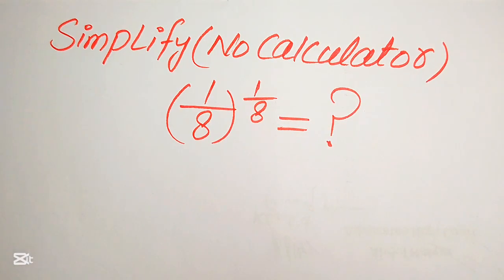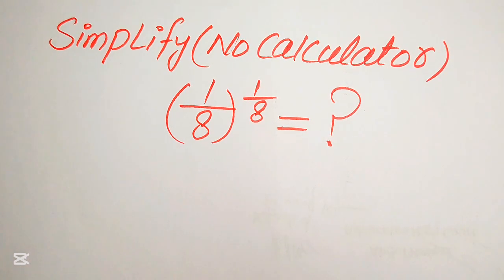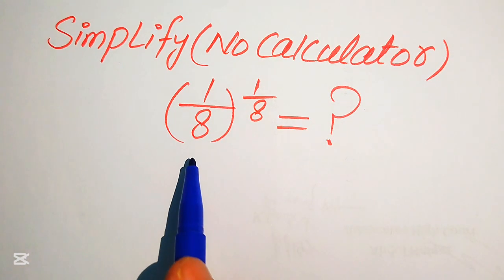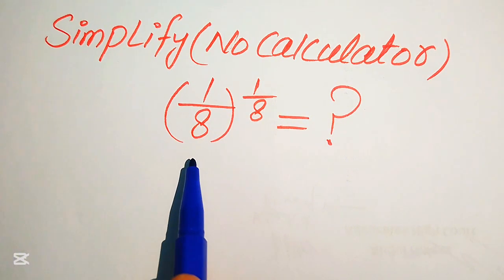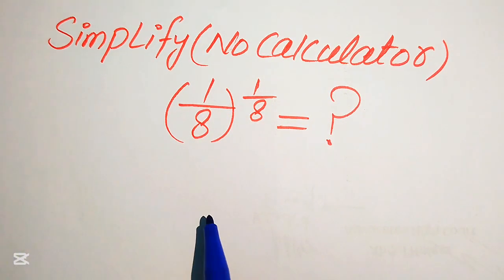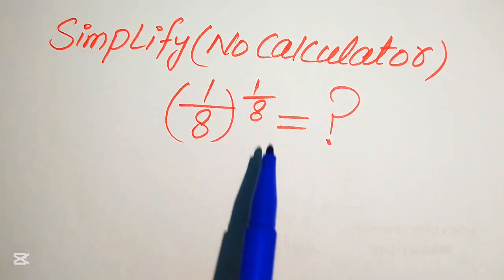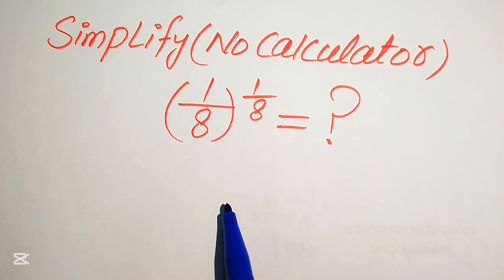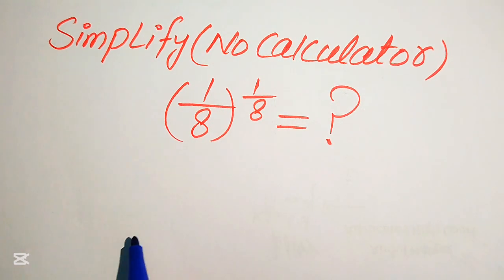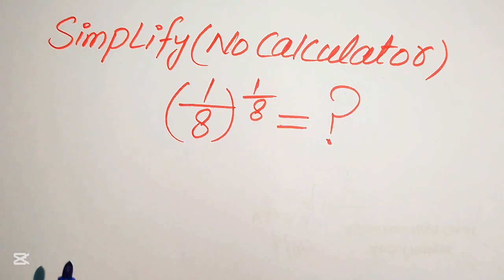Hello everyone. Today I want to show you how to simplify this algebraic expression without using the calculator. We have 1 over 8 to the power of 1 over 8, and we need to write this algebraic expression into simplified form. Remember, the calculator is not allowed in this problem, which means we will show all of the working on paper.